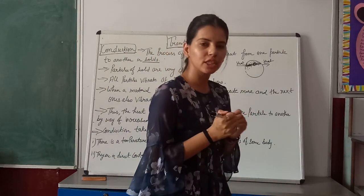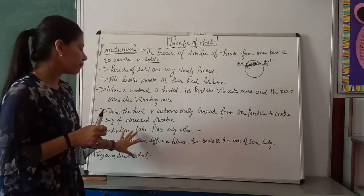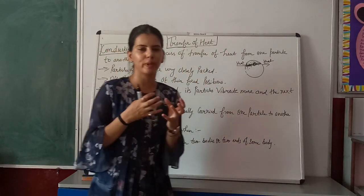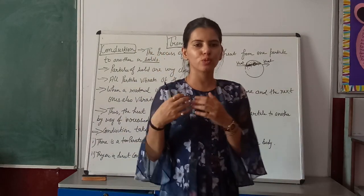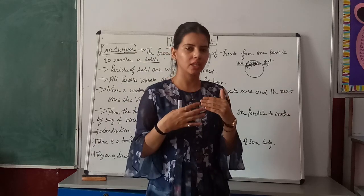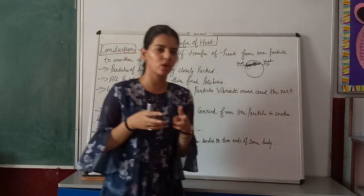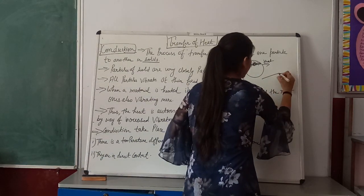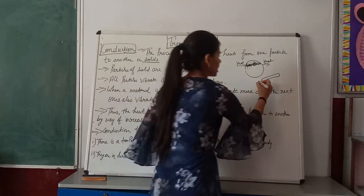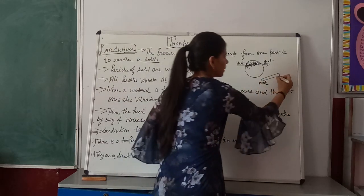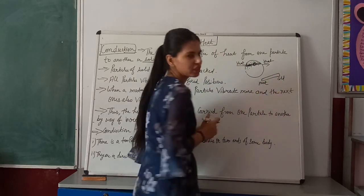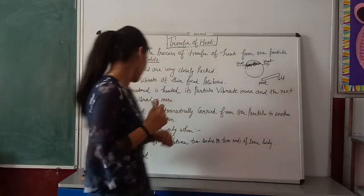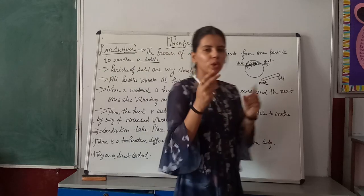What are the conditions for conduction? There are two conditions. First, there must be a temperature difference in two bodies. For example, if you place a cold spoon in a hot utensil, the temperature is different. Or, in the same body like an iron rod, one end can be hot and the other cold. Temperature difference is necessary for conduction to take place. Second, they must be in direct contact.